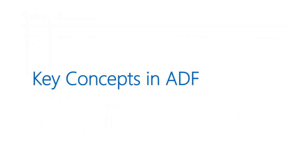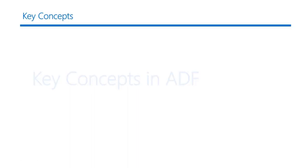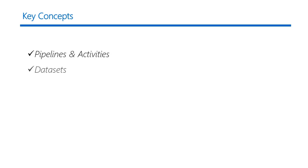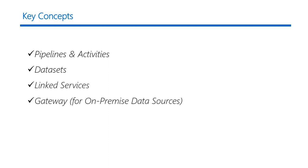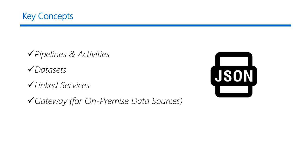But before that, you need to pick up a few key concepts. You need to understand and define four key concepts: pipelines and activities, data sets, linked services, and gateway — but that's only if you have an on-premise data store. And the beauty is, most of them can be defined with a simple JSON document. That's awesome, right?